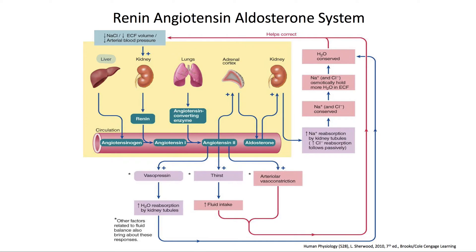Hey guys, so in this video we're going to cover the renin-angiotensin-aldosterone system, which is part of the urinary system. The first thing to notice is that the liver is going to be secreting angiotensinogen. Any time you see the suffix -ogen, that generally means it's the precursor for something that is similarly named, which you'll see is the case — we have angiotensin 1. This system is activated when you have low levels of salt, low blood pressure, or low ECF volume.